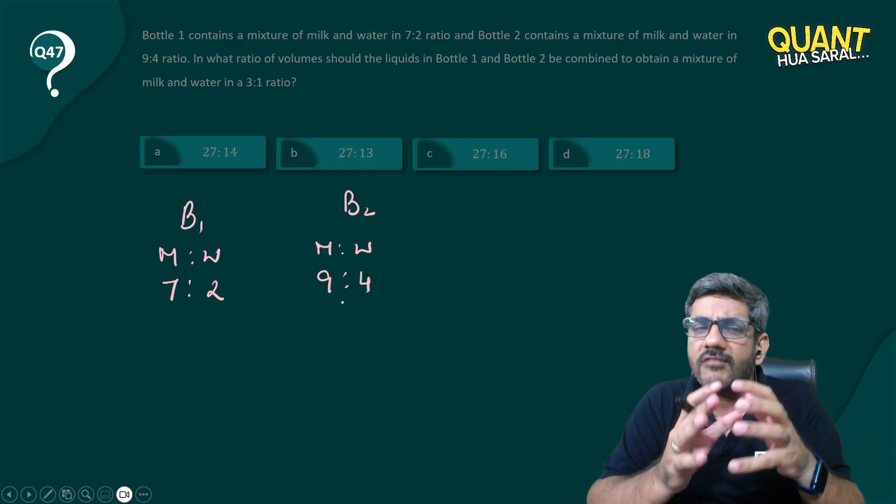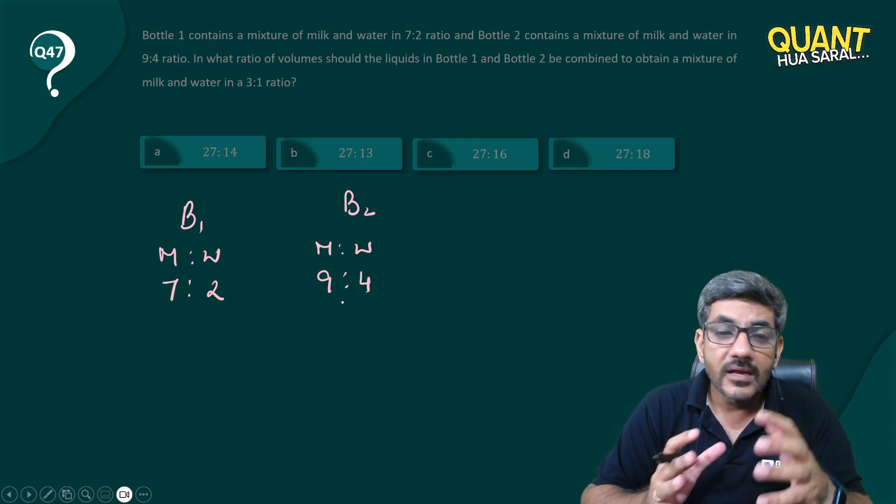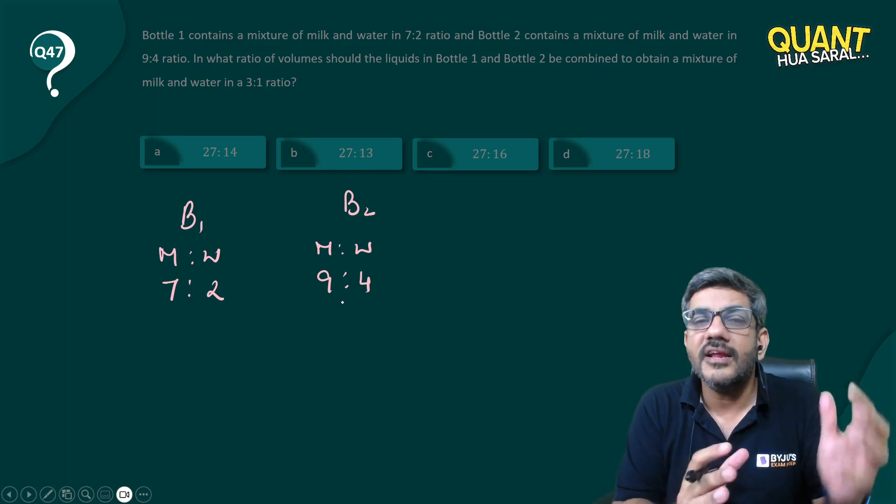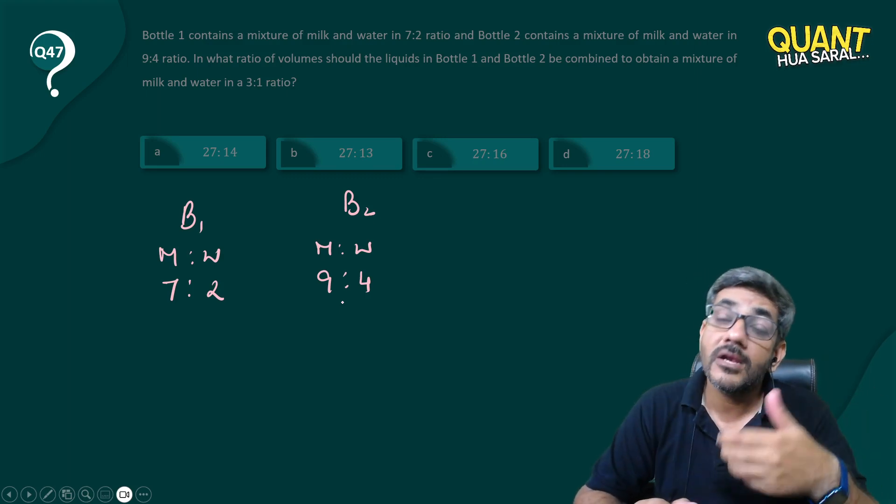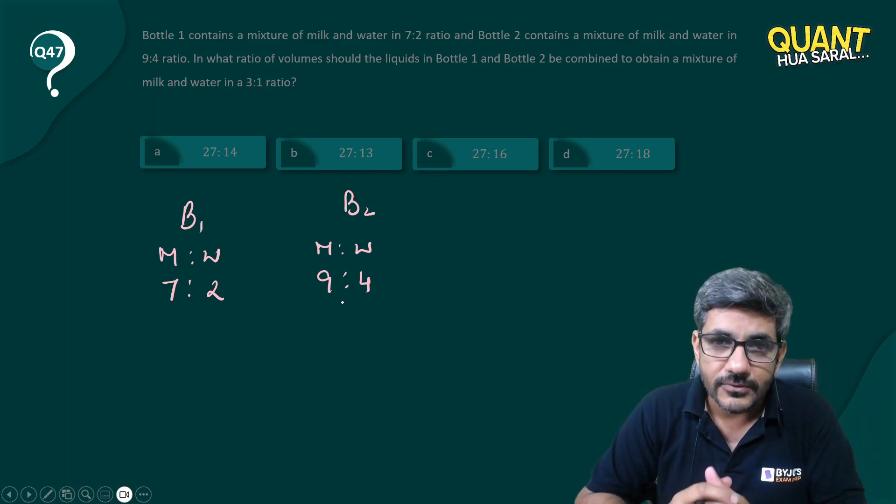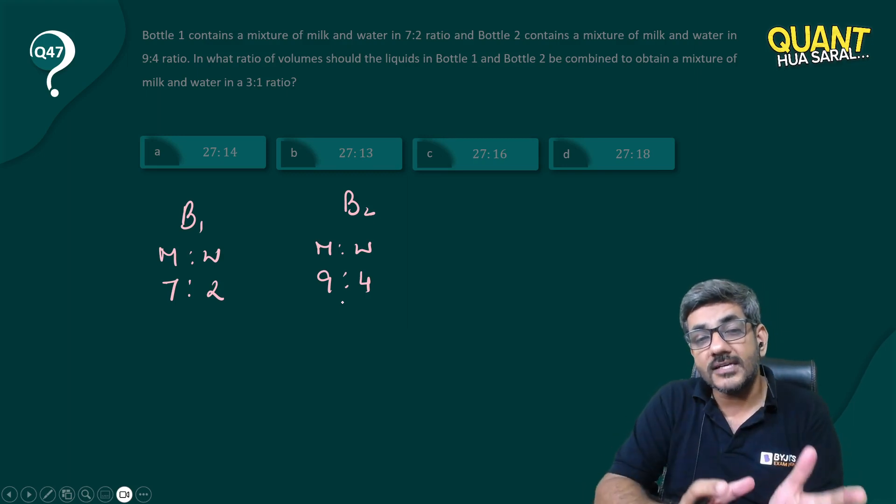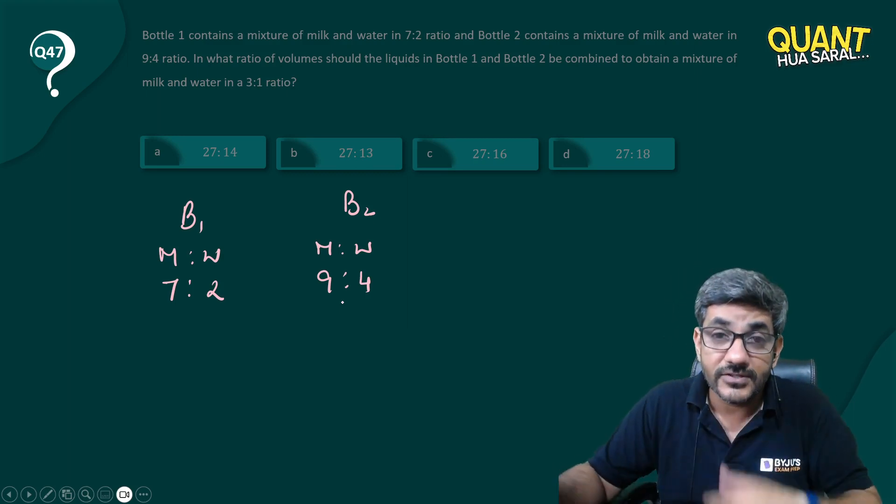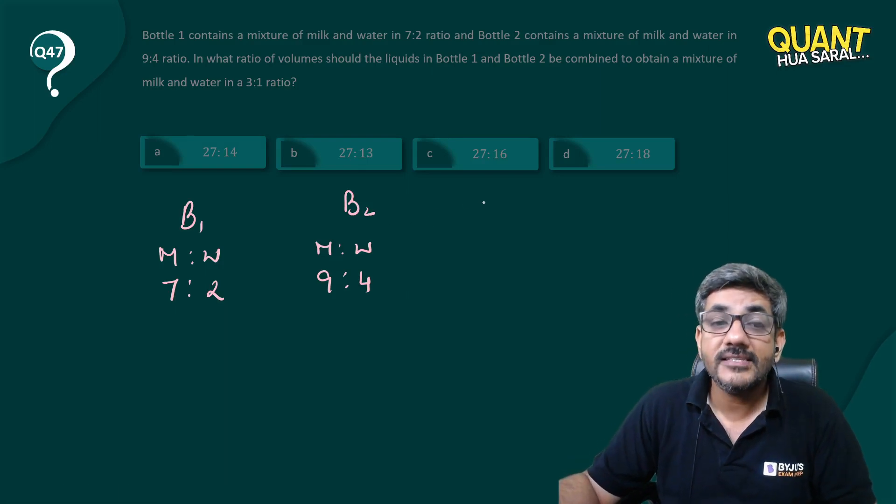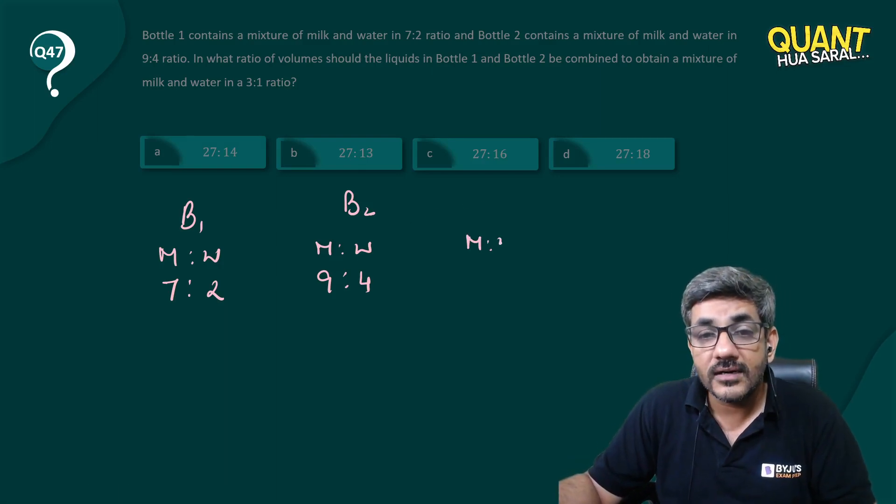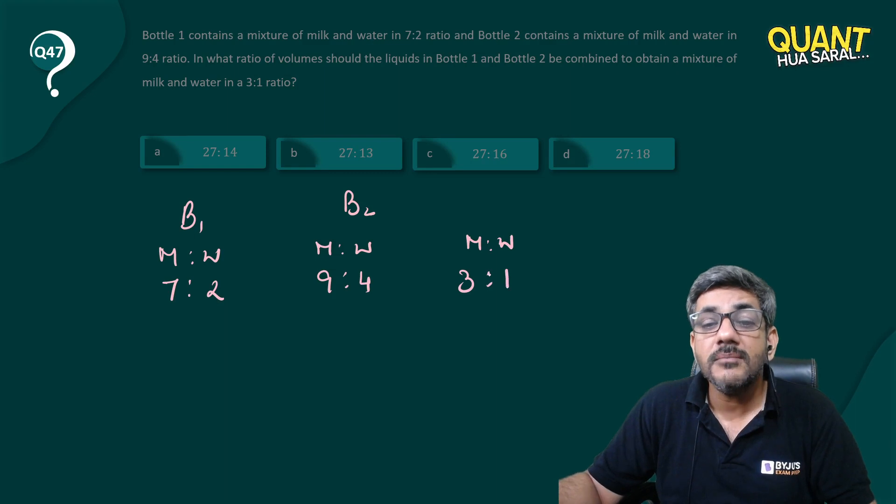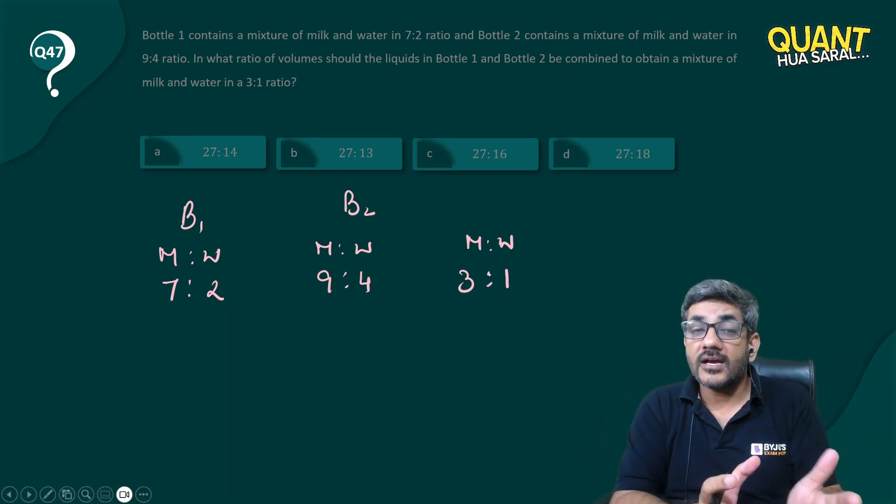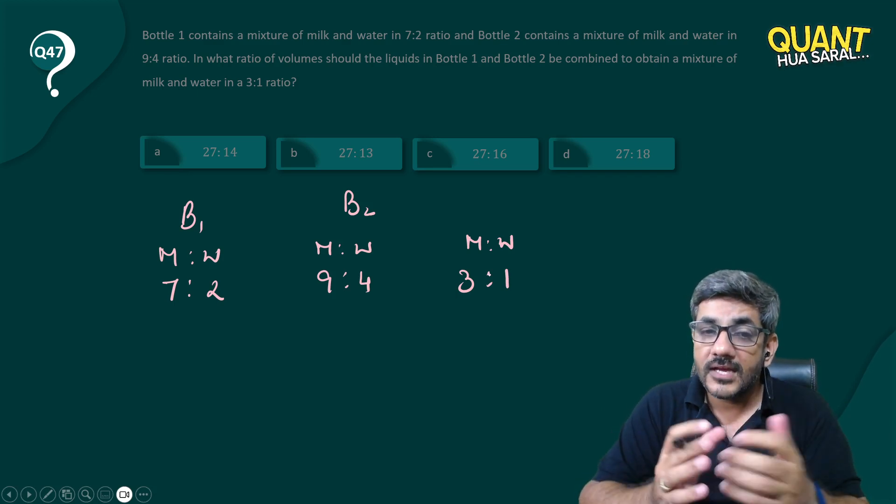If Bottle 1 has milk and water in a ratio of 7:2, most probably the quantity taken from Bottle 1 would be a multiple of 9 (7 plus 2). The quantity taken from Bottle 2 would be a multiple of 13 (9 plus 4). Finally, the ratio of milk and water becomes 3:1, which is a multiple of 4.